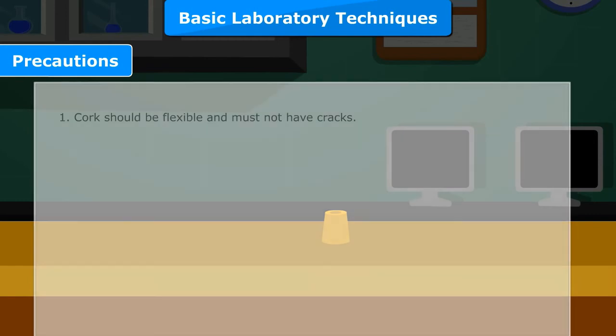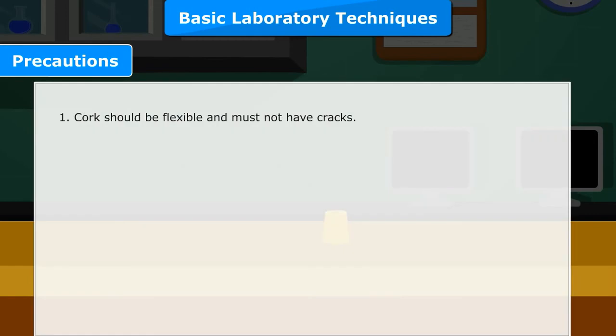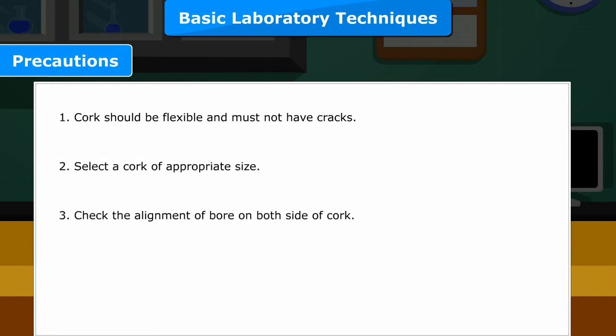Precautions: 1. Cork should be flexible and must not have cracks. 2. Select a cork of appropriate size. 3. Check the alignment of the bore on both sides of the cork. 4. The boring should be done vertically downward.